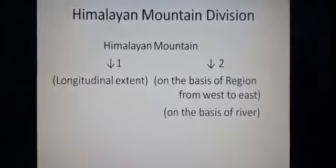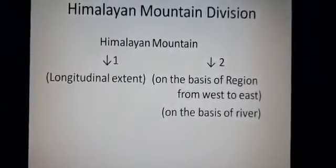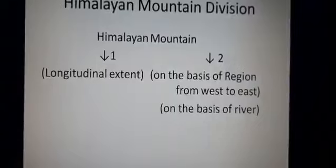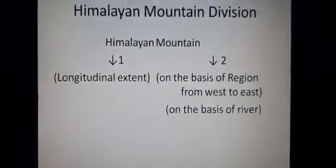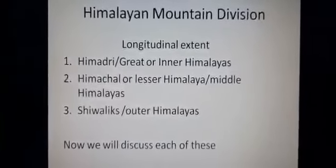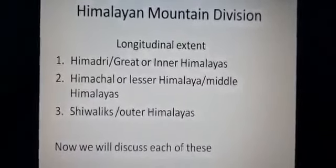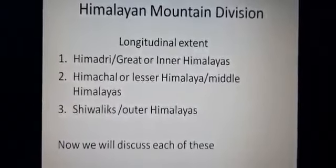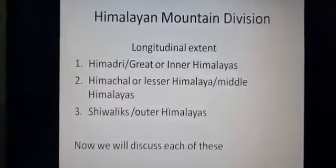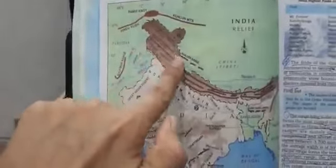Now we'll study the division of the mountains. One is the longitudinal extent and the second is on the basis of region from west to east, based on rivers. In the longitudinal extent, we have: first, Himadri (also called Greater or Inner Himalaya); second, Himachal (also called Lesser or Middle Himalaya); and third, Shivalik (also called Outer Himalaya).